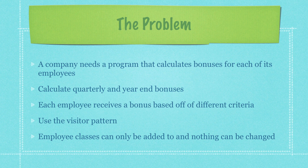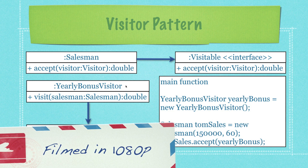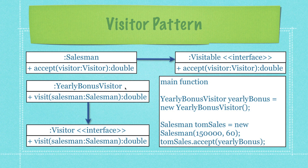The visitor pattern is often confused, but in this tutorial I hope to completely explain it. We're going to have our salesmen, sales trainees, and bosses. All of them are going to receive different types of bonuses. Then we're going to have a yearly bonus visitor that will calculate the yearly bonus for each of these different employee types.